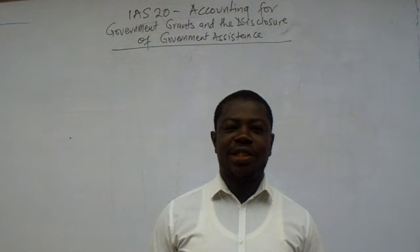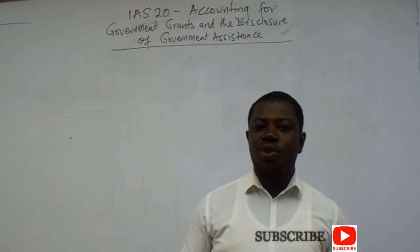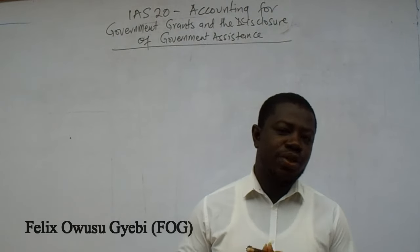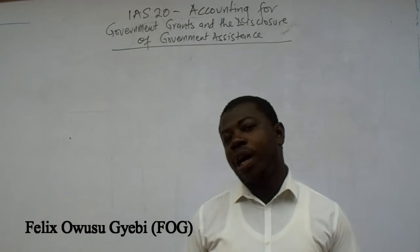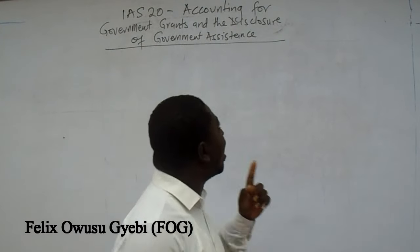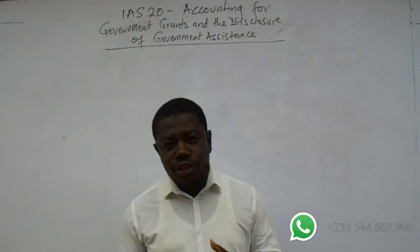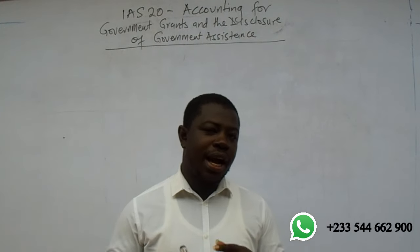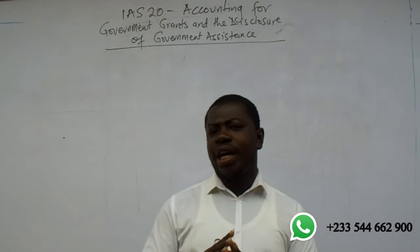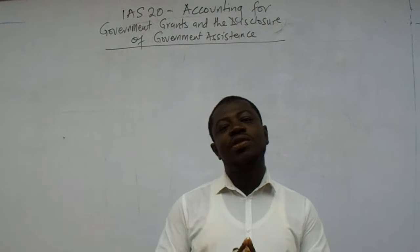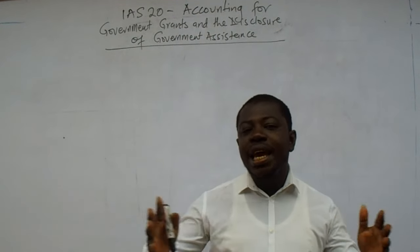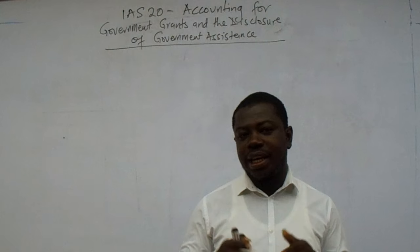Good day. Welcome to another session of FOC Tutorials. Today we want to continue our series on the IFRS and we want to look at IAS 20, what we normally call government grants. The full name of the standard is Accounting for Government Grants and the Disclosure of Government Assistance. I always want to write the name of this standard in full because I believe that the name is a key to understanding the standard in itself.